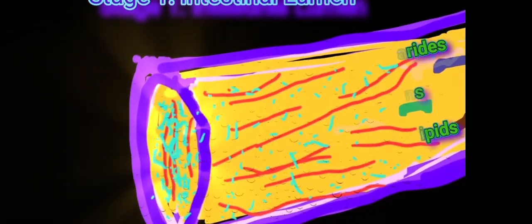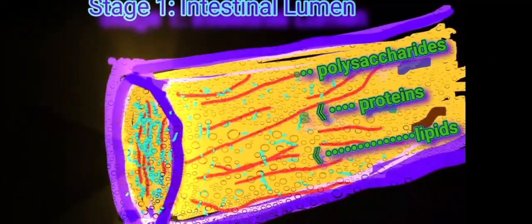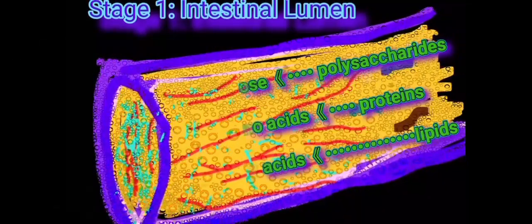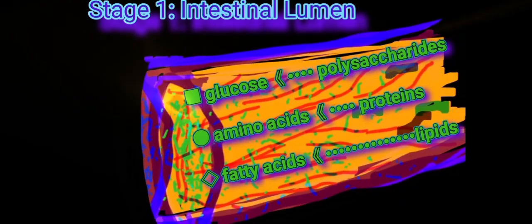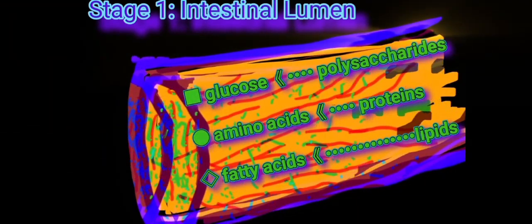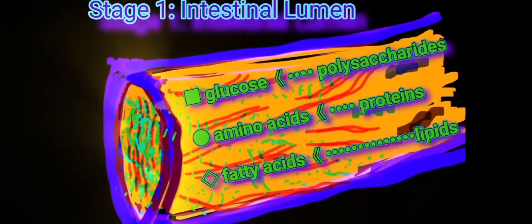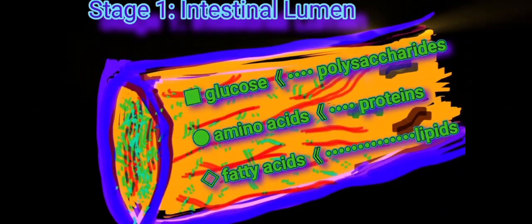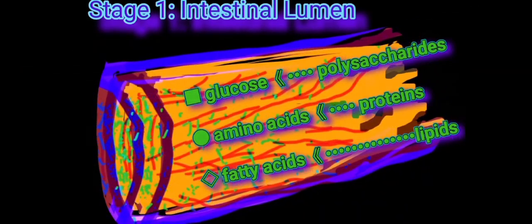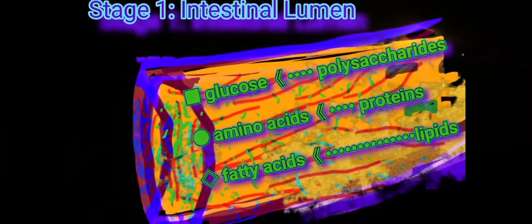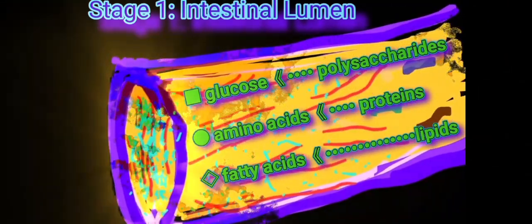There are three stages of catabolism. Stage one, which occurs primarily in the intestinal lumen, involves the digestion of dietary components — polysaccharides, proteins, and triacylglycerols — into their building block components: glucose, amino acids, fatty acids, and monoacylglycerol, respectively.